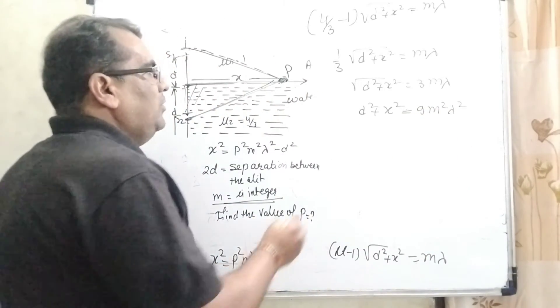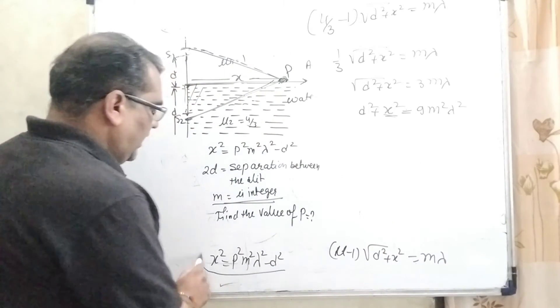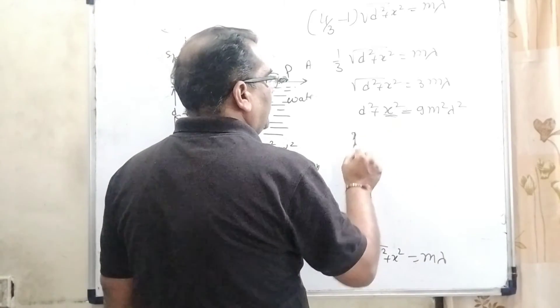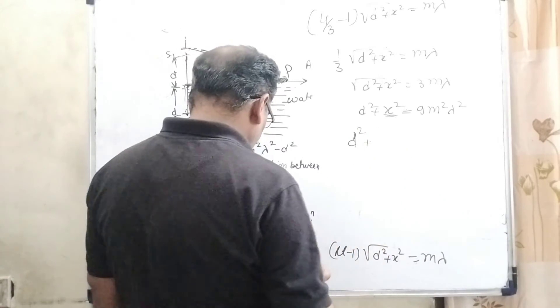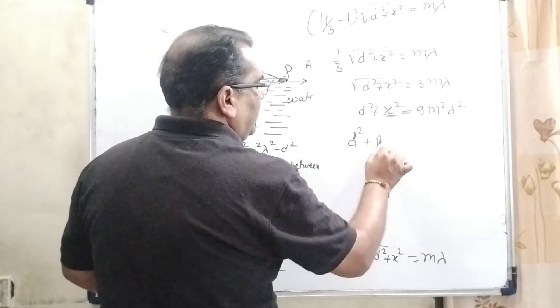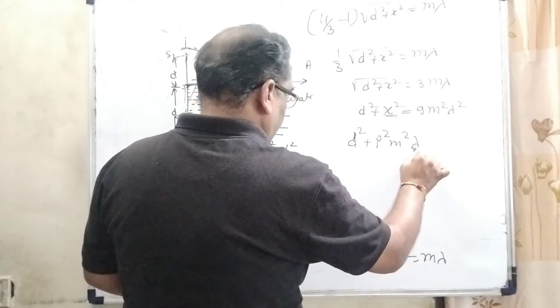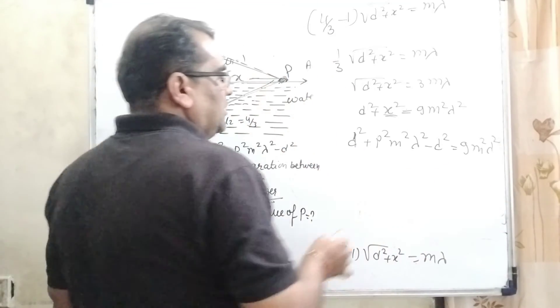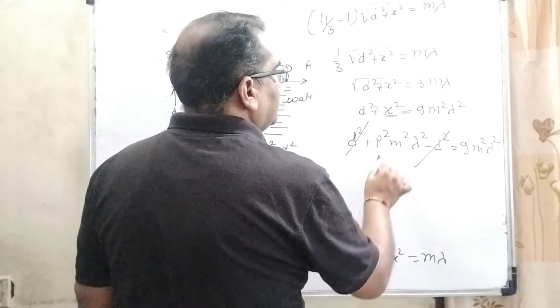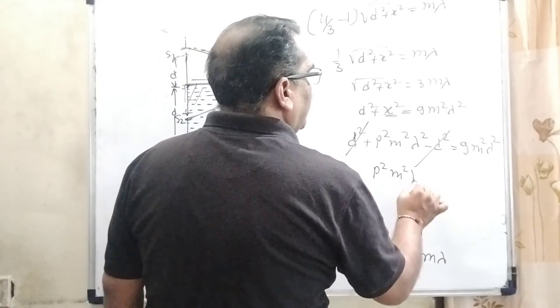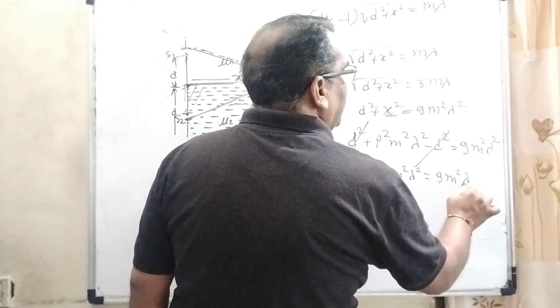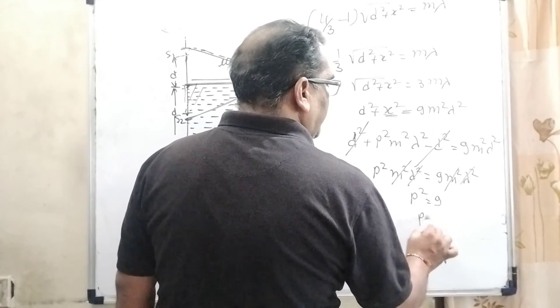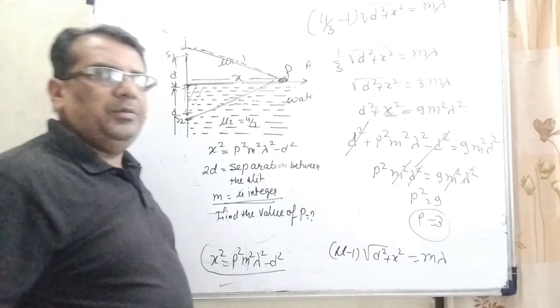We're given x² in the question: x² = p²m²λ² - d². Substituting this: d² + p²m²λ² - d² = 9m²λ². The d² terms cancel: p²m²λ² = 9m²λ². The m² and λ² cancel out, giving p² = 9, so p = 3. Our answer is 3.